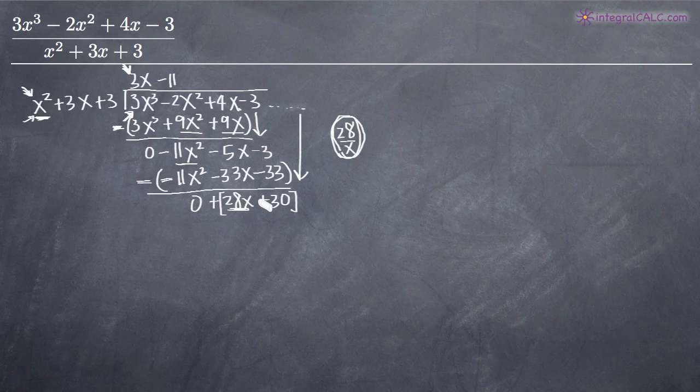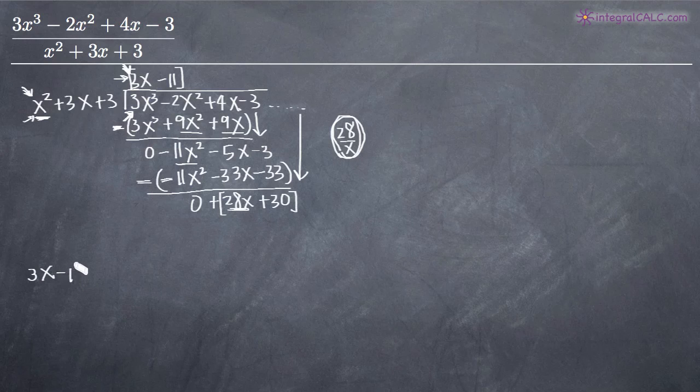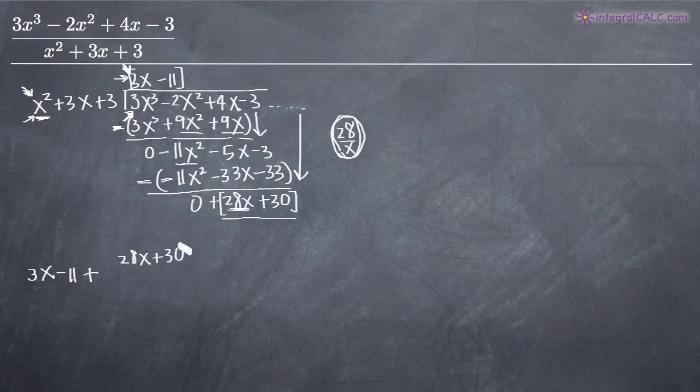So we stop there and write the simplified form as what we got on top—3x - 11—plus the remainder, which is what's left: 28x + 30.